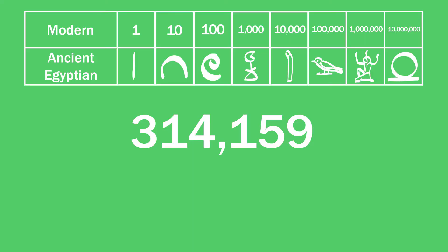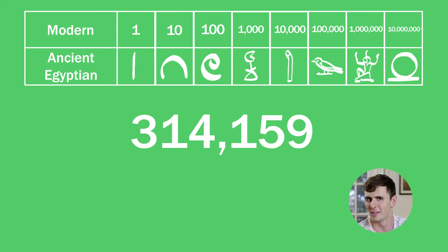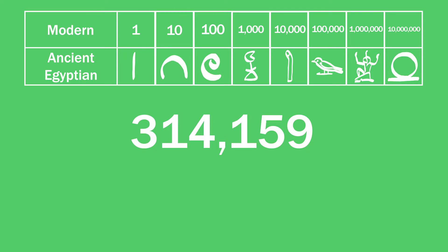So, for example, an ancient Egyptian writing this number — 314,159, the number of hearts I've broken — would look like this: with three symbols for 100,000, one for 10,000, four for 1,000, one for 100, five for 10, and nine symbols for 1.